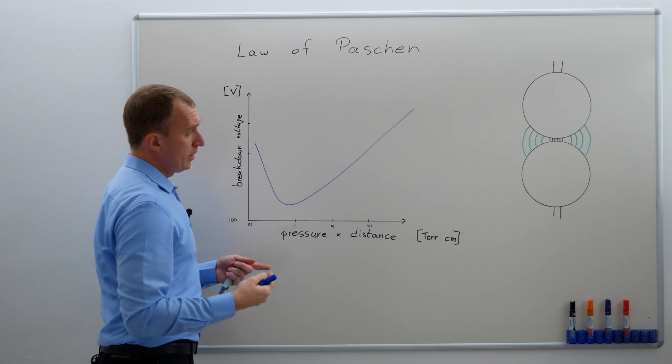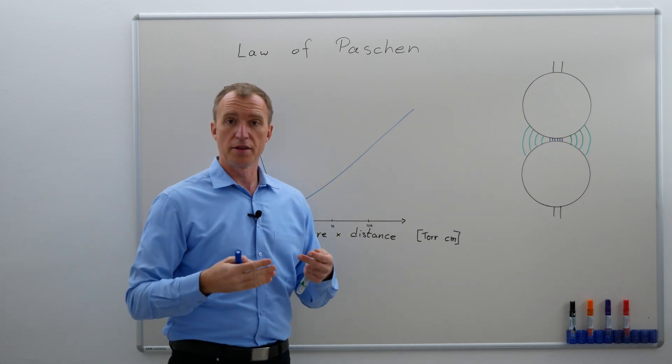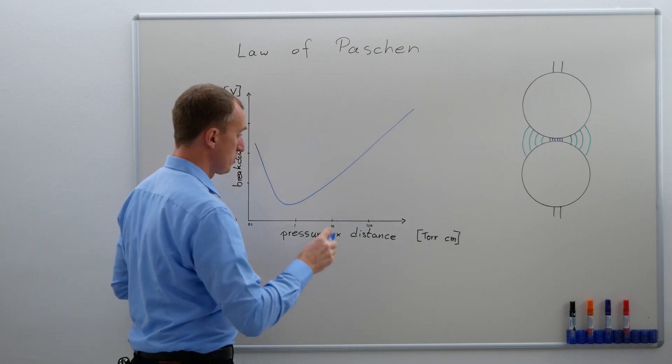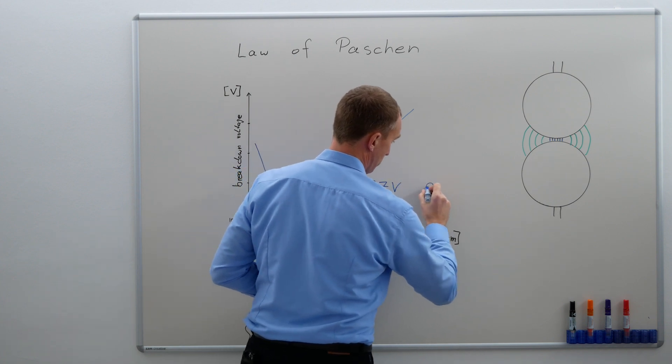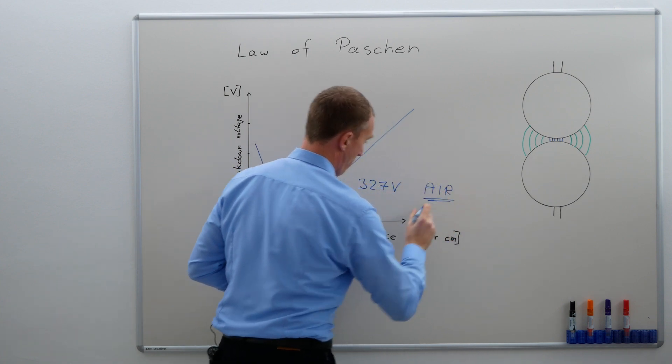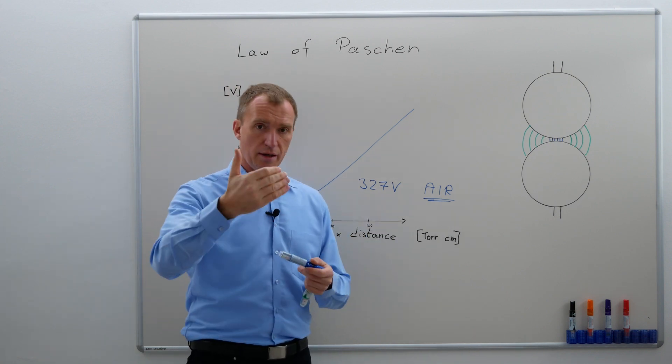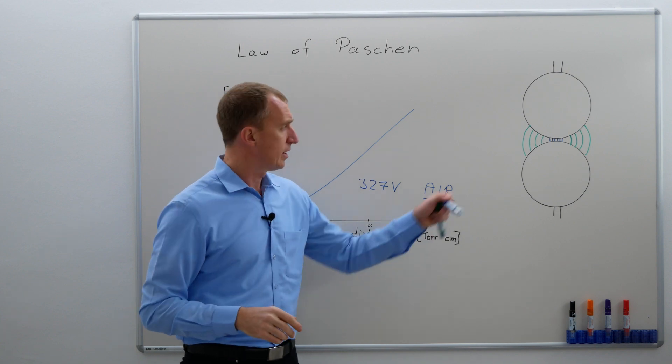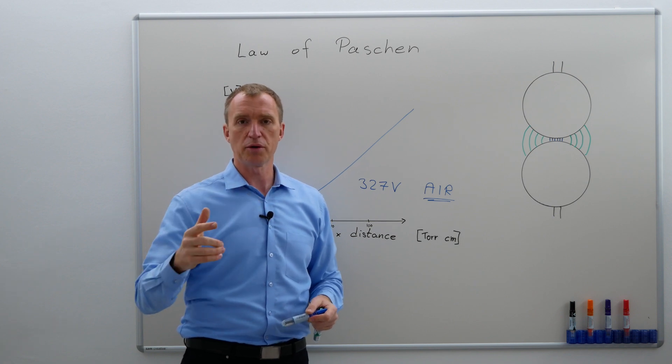For every gas, we are going to have something which is often referred to as the Paschen minimum. The Paschen minimum for air is as low as 327 volts, give or take a little bit. This is for air with an atmospheric pressure of 1, and if I recall correctly, the distance between these two electrodes was only 7.5 micrometers.